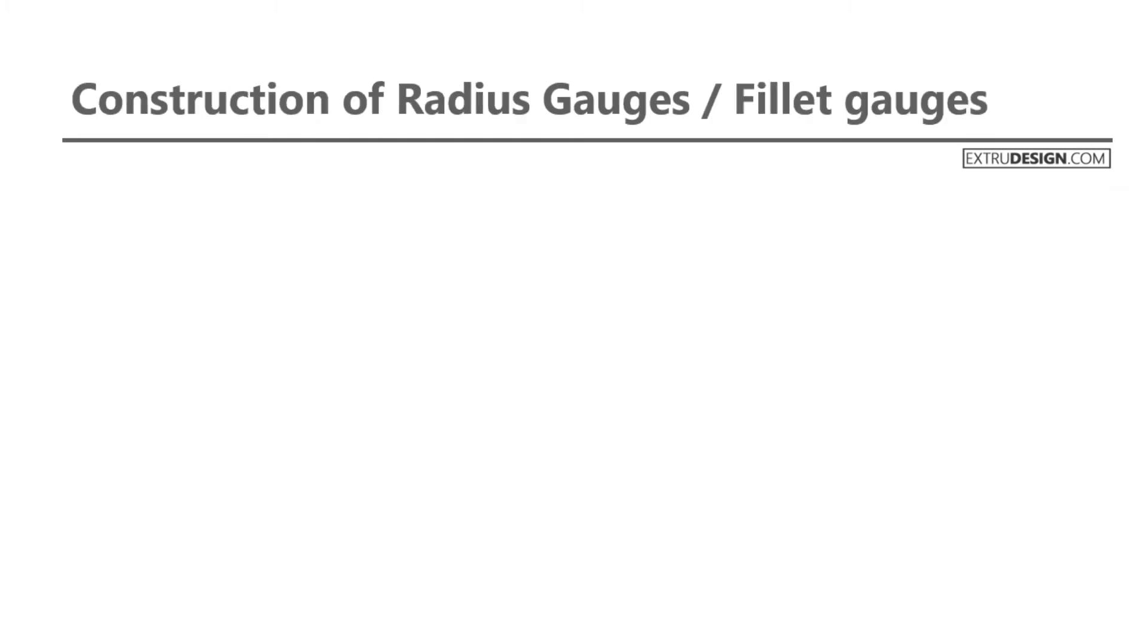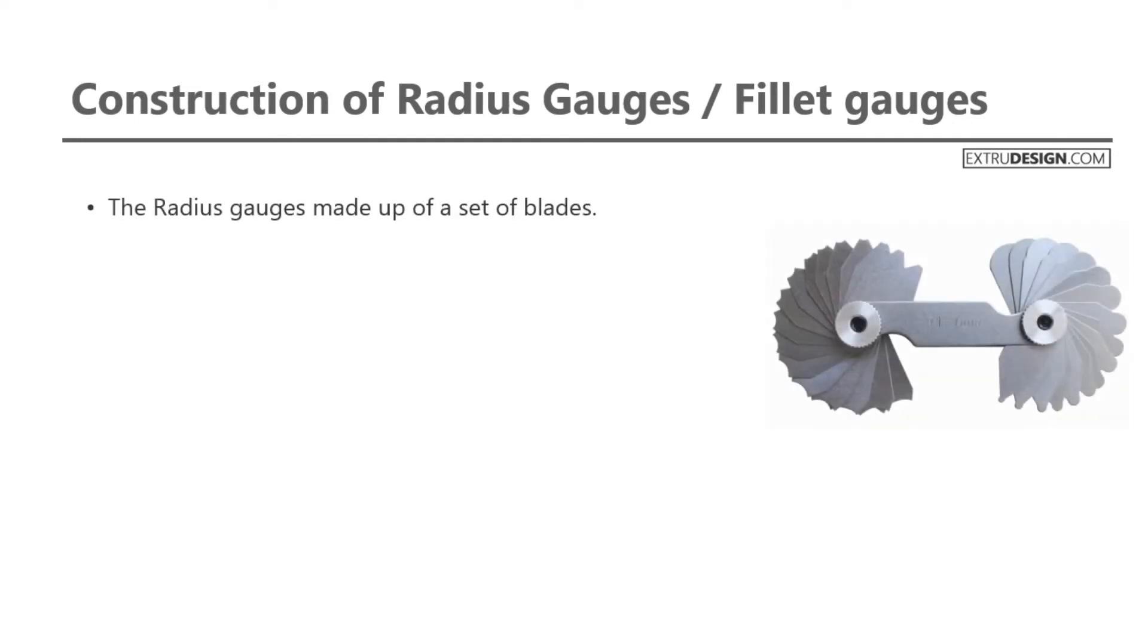Let us see the construction of radius gauges. The radius gauges are made up of a set of blades. See the picture as shown on the right side.